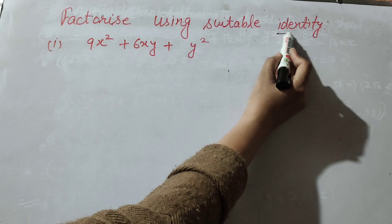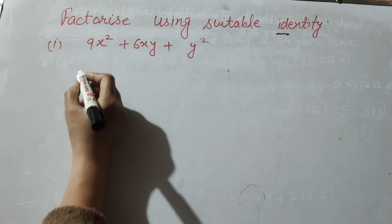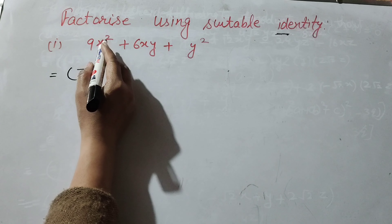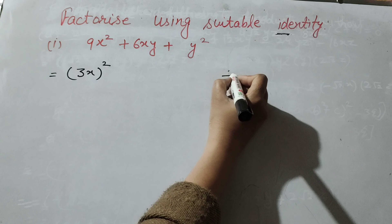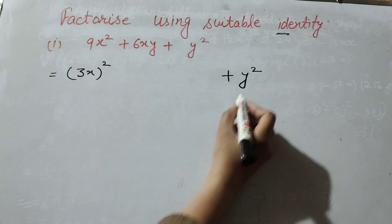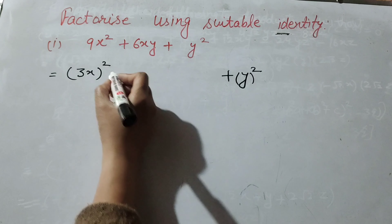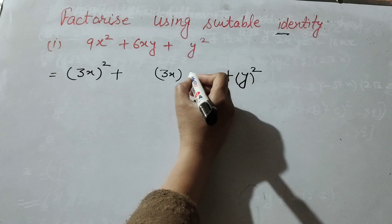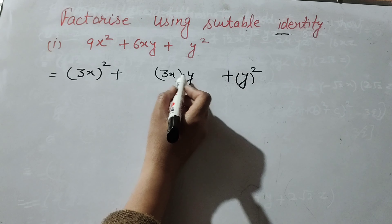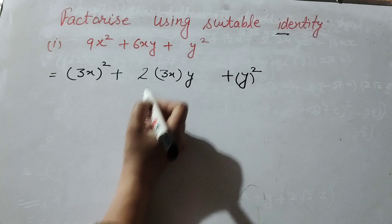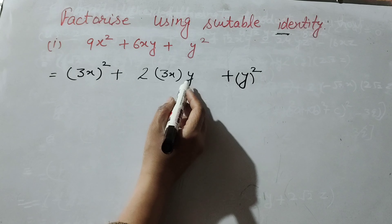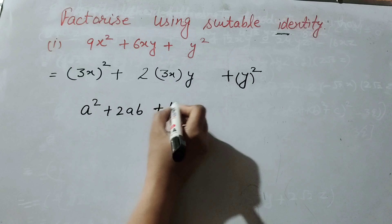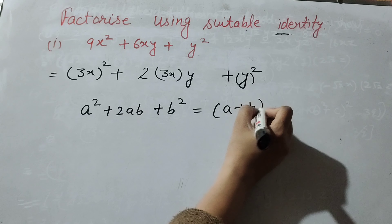To factorize this expression we use the identity method. We write 9x squared as (3x) squared, meaning 3x multiplied by 3x equals 9x squared. At the end we write y squared, and in the middle there is 6xy. We write it as 2 into 3x into y, which equals 6xy. Now it becomes the identity: a squared plus 2ab plus b squared equals (a plus b) whole squared.